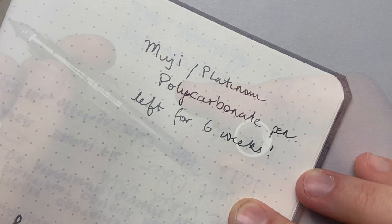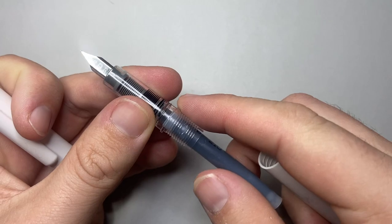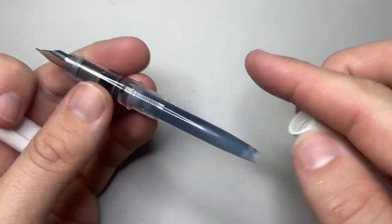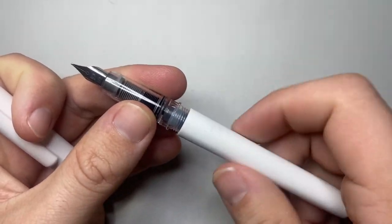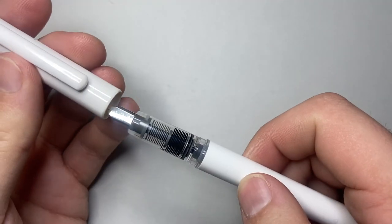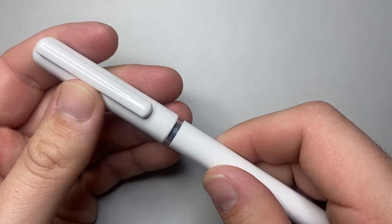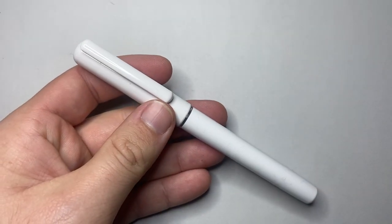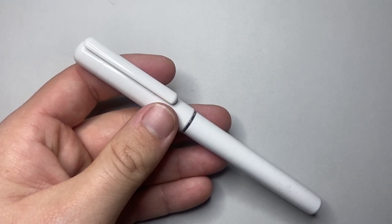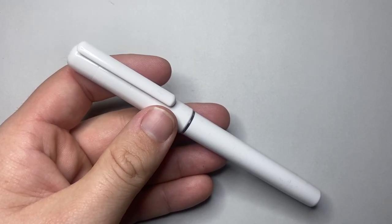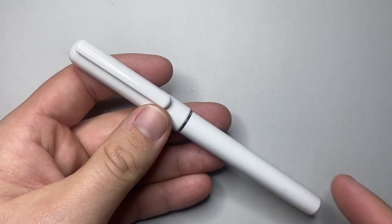I would assume this could be eyedropper. There's nothing to say that it couldn't be, and it all looks like one piece of plastic. Silicon grease on the threads, maybe an O-ring, that kind of stuff. Very simple way of converting this pen into an eyedropper and would make it a nice option. It's a nice simple, very clean fountain pen, and that's what Muji is known for: clean, simple, minimalist kind of designs of things, and this ties in very nicely with that design aesthetic.